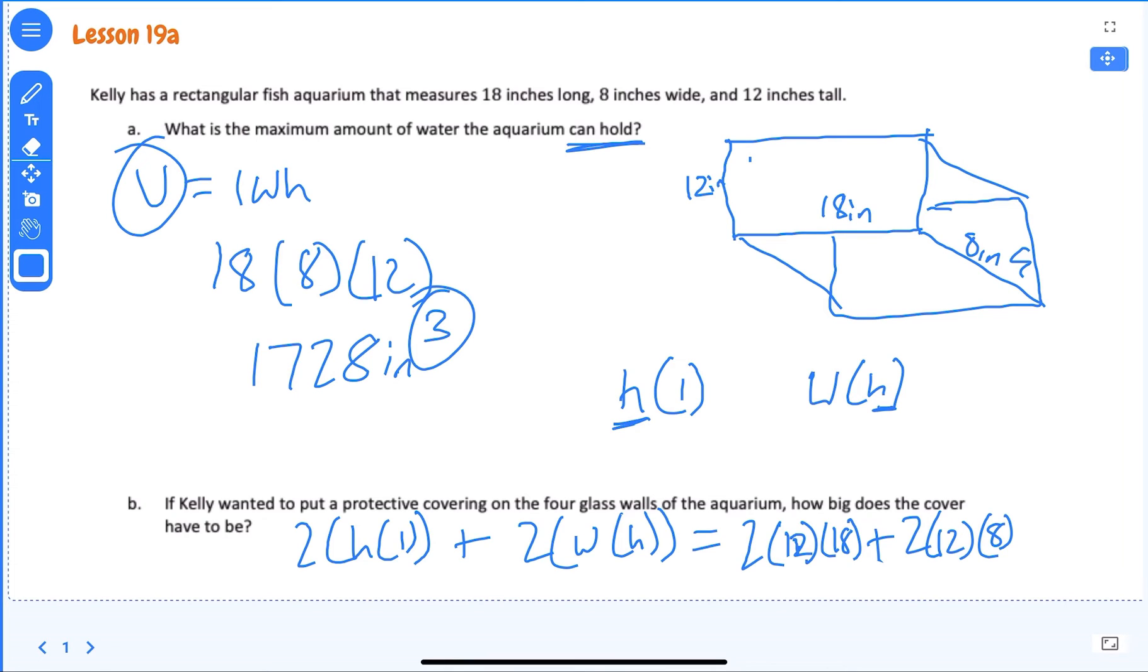you get this one is 432, this one is plus 192, and that would equal 624 inches squared because we're trying to find a surface area of those two.